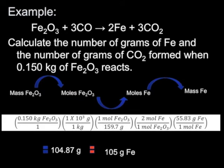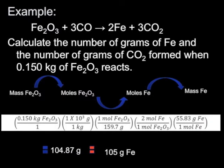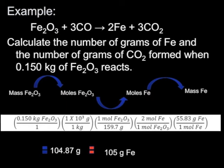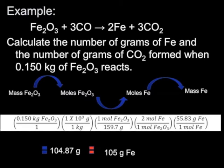Again, we want to put the 1 mole of iron oxide on the bottom to cancel out that unit, giving us this 2 moles of iron on top. We want grams at the end, so we're going to have to multiply by its molar mass, the 55.8 grams. Do the math, multiply everything on top, divide everything on bottom, and we'll get this 104.87, excuse me. Taking care of significant figures, which would be 3 in this case, we end up with 105 grams of iron.